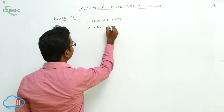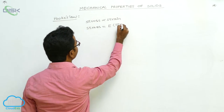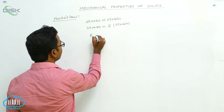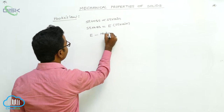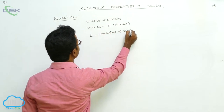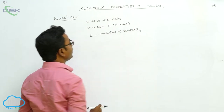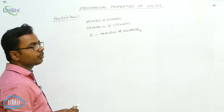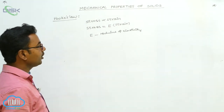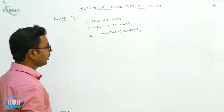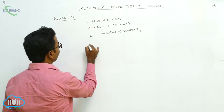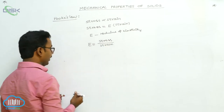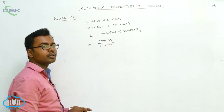Stress equals some proportionality constant E multiplied by strain. Here E is the proportionality constant, which is called the modulus of elasticity. The statement of Hooke's law is: stress is directly proportional to strain within the elastic limit, and stress equals E into strain, where E is the modulus of elasticity. The formula for modulus of elasticity is E equals stress divided by strain.